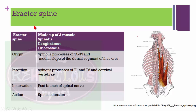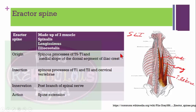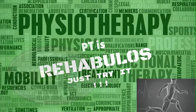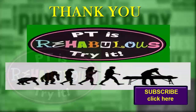Erector spinae is made up of three muscles: spinalis, longissimus, and iliocostalis — remember 'SLI'. The origin is from T9 to T1 and the medial slope of the dorsal segment of the iliac crest. It inserts into the spinous process of T1, T2, and cervical vertebrae — where it becomes the cervicis muscle. Innervation from the posterior branch of the spinal nerve. Action: spine extension.